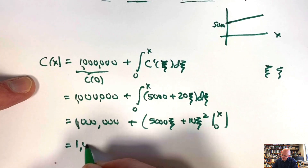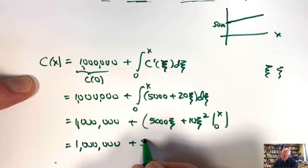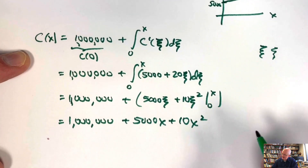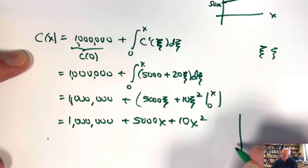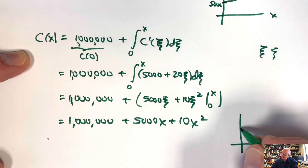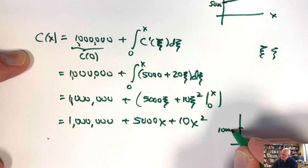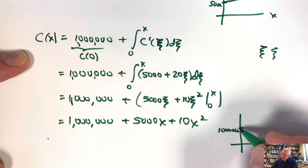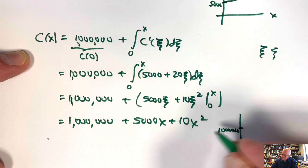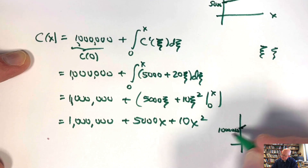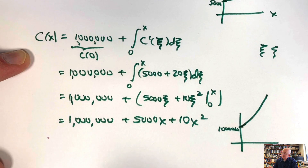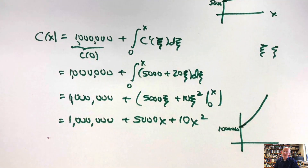Therefore C(x) = 1,000,000 + 5000x + 10x². This is a quadratic — a concave-up parabola. The total cost starts at 1,000,000 when x = 0, and increases with increasing slope as you drill deeper. This concave-up shape is the big-picture lesson: drilling costs accelerate with depth.